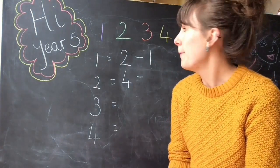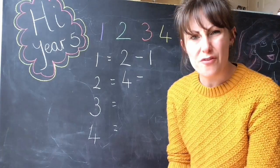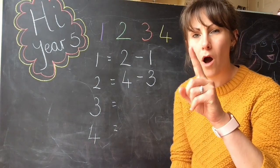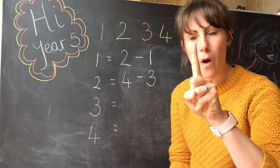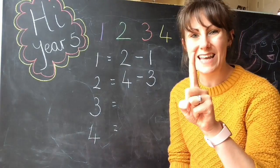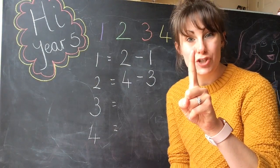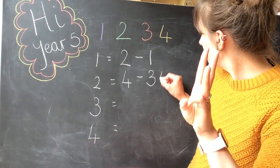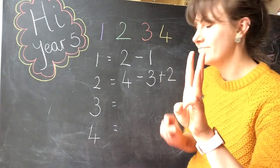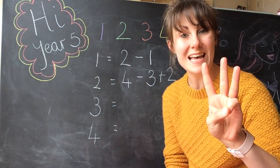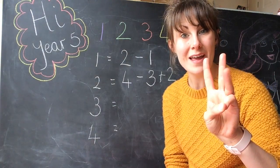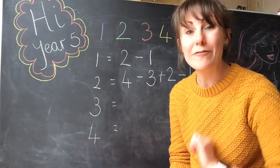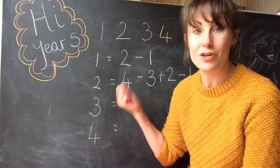4 take away 3. So if I've got 4 take away 3 I'm now at 1, but I need to get to 2. If I added 2 to my 1, I've got 3. So now all I need to do to get down to 2 is take away 1. I've used all four of my numbers and I've reached the number 2.